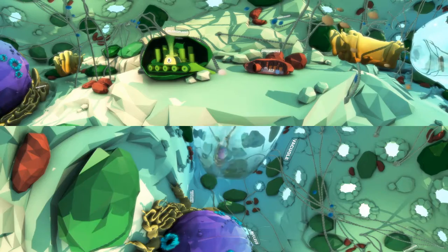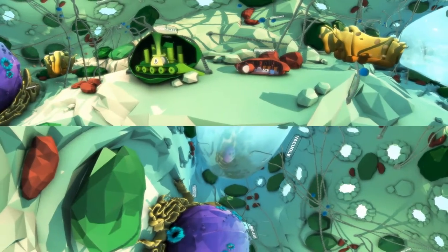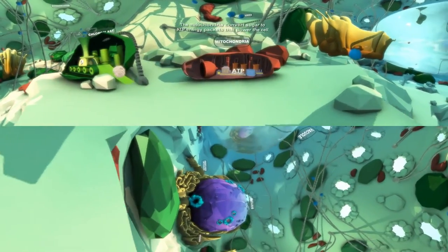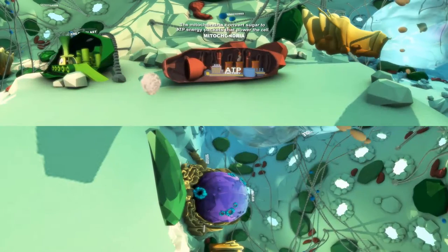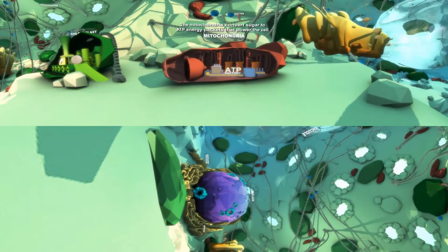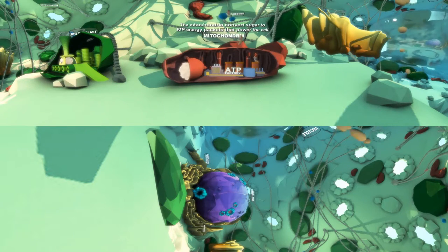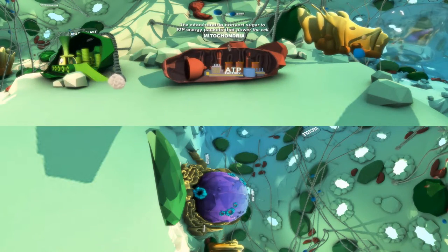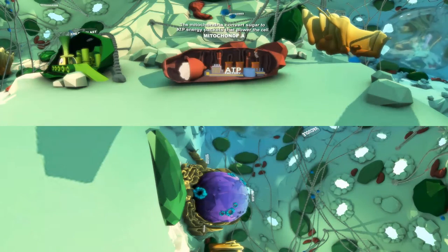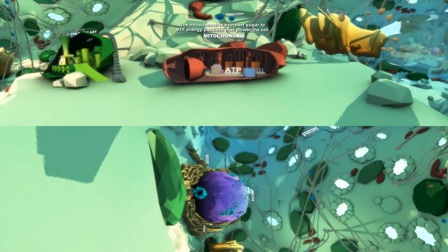In the mitochondria, sugar that was created by chloroplasts is converted into energy packets called adenosine triphosphate, or ATP. These ATP energy packets become the source of energy to power the many activities and processes occurring around a plant cell.